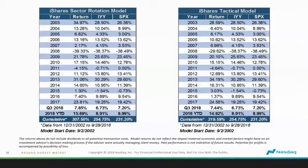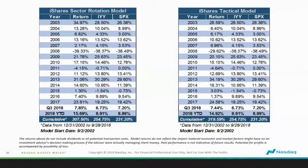The returns for the iShares sector rotation model from 2003 are up 307% versus IYY at 254% and S&P up 231%. The tactical model is almost the same — up 319% versus 254% versus 231%. I think of a portfolio like the sun and the planets: what's my core position — the sun? The planets surrounding it could be two of these models. I might own the iShares tactical model and the iShares sector model as planets with different returns some years. That's how I manage portfolios.